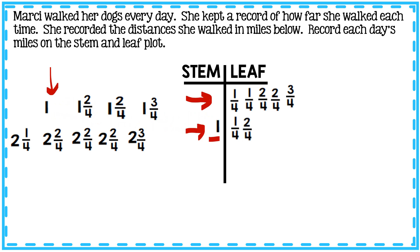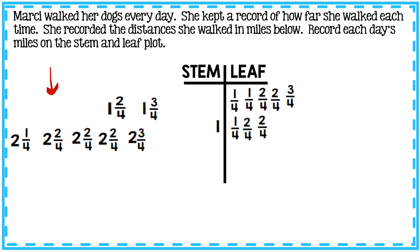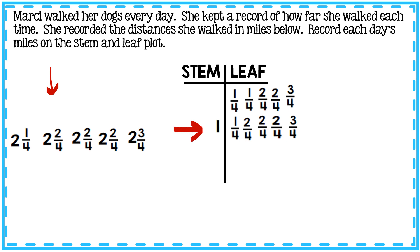The next day she walked one and two-fourths miles — I leave the one on the stem and the two-fourths goes on the leaf. The next day she walked one and two-fourths miles again. So far she walked one and one-fourth, one and two-fourths, one and two-fourths, one and two-fourths, and one and three-fourths. This row represents all days she walked with a whole number of one mile plus an additional fraction.